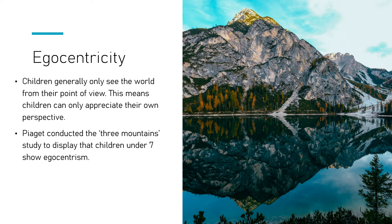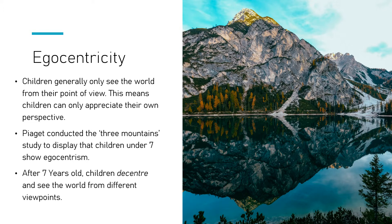A key part of growing up and understanding the world is being able to view things from other people's perspectives. Piaget's theory was that over the age of seven we get better at that, and he called this decentering — we become less focused on ourselves. The term 'ego' is a Latin word meaning 'I', so egocentrism literally means 'I-centred'. After the age of seven, children decenter and begin to see the world from other people's points of view.